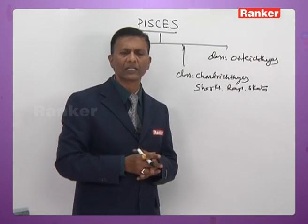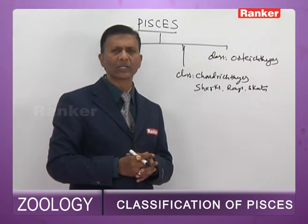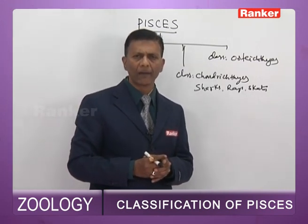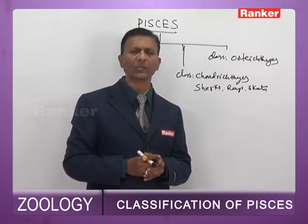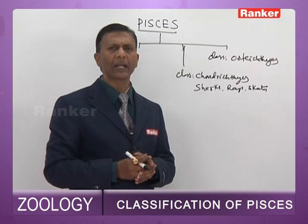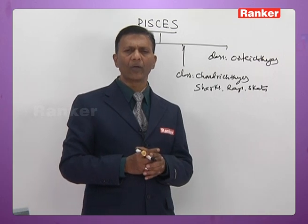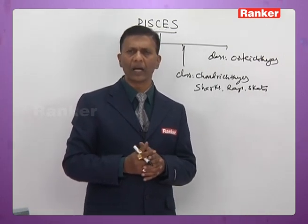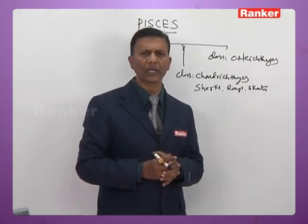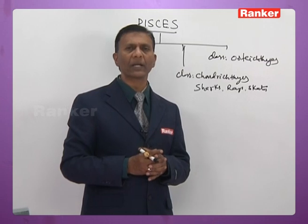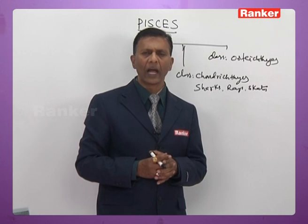All Chondrichthyes are marine. They have placoid scales as an exoskeleton, also called dermal denticles. The caudal fin is heterocercal. Endoskeleton is cartilaginous. The intestine has a spiral valve. The alimentary canal opens to the exterior through the cloaca. They have a two-chambered heart, but instead of bulbus arteriosus, cartilage fish have conus arteriosus. Five to seven plates of gills are present, naked without any operculum.